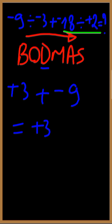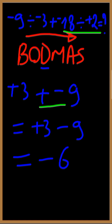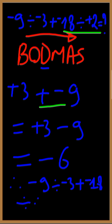Positive 3 plus negative 9 is simply the same as positive 3 minus 9. This will simply be equal to negative 6. Therefore, negative 9 divided by negative 3, plus negative 18 divided by positive 2, is simply equal to negative 6. We underline the answer — we are done with the solution of this question.